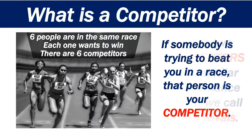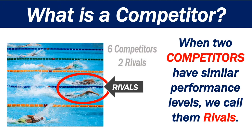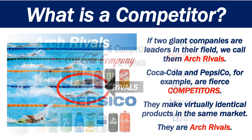When two competitors have similar performance levels, we call them rivals. The image on the left shows a swimming competition. There are six competitors in the image, but there are two main rivals.